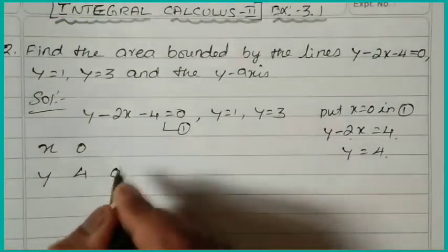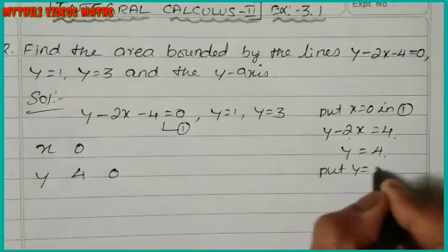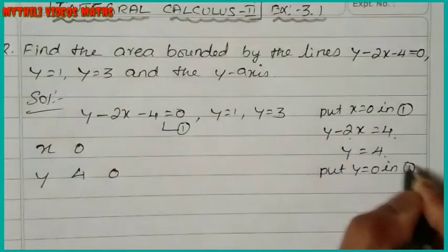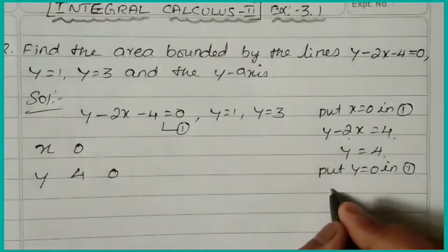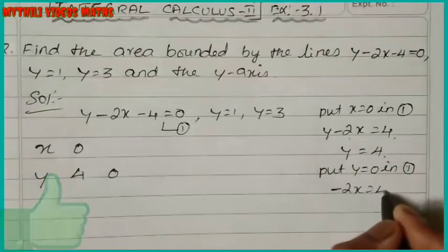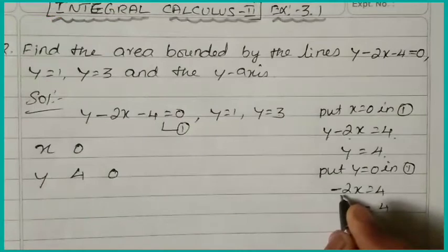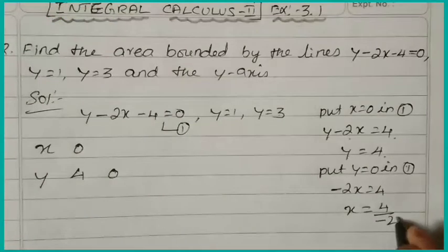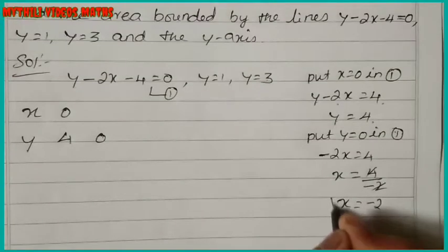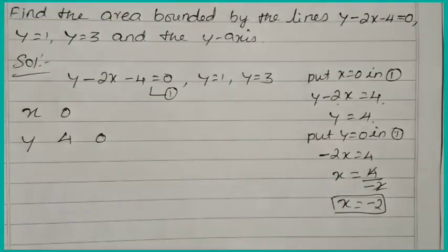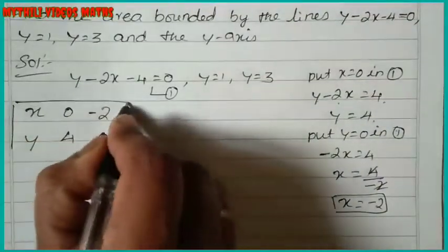Now put y equal to 0 in equation 1. Substituting y equal to 0 gives minus 2x equal to 4, so x equal to 4 divided by minus 2, therefore x equal to minus 2. So our two points are (0, 4) and (-2, 0).